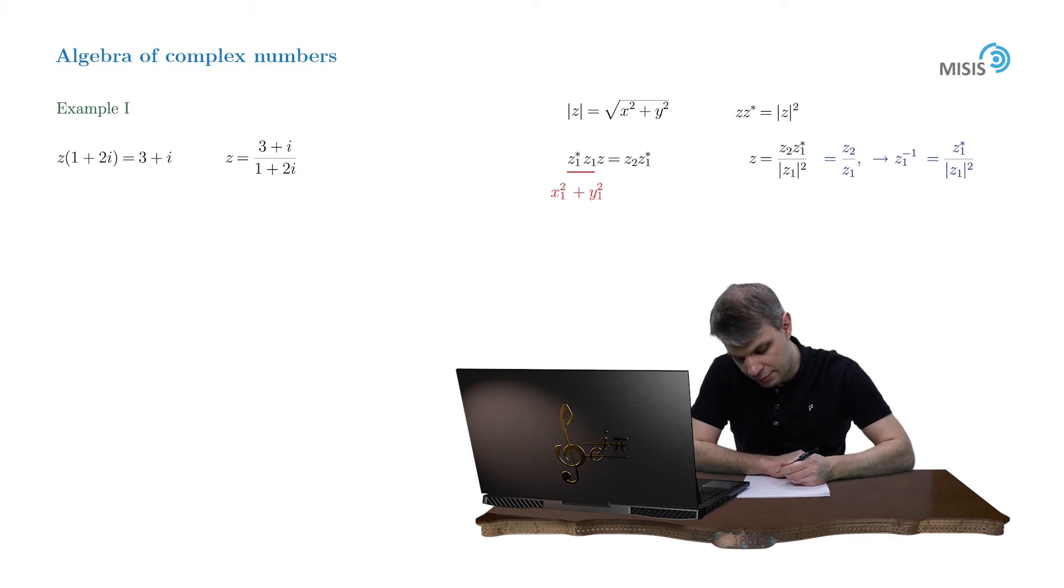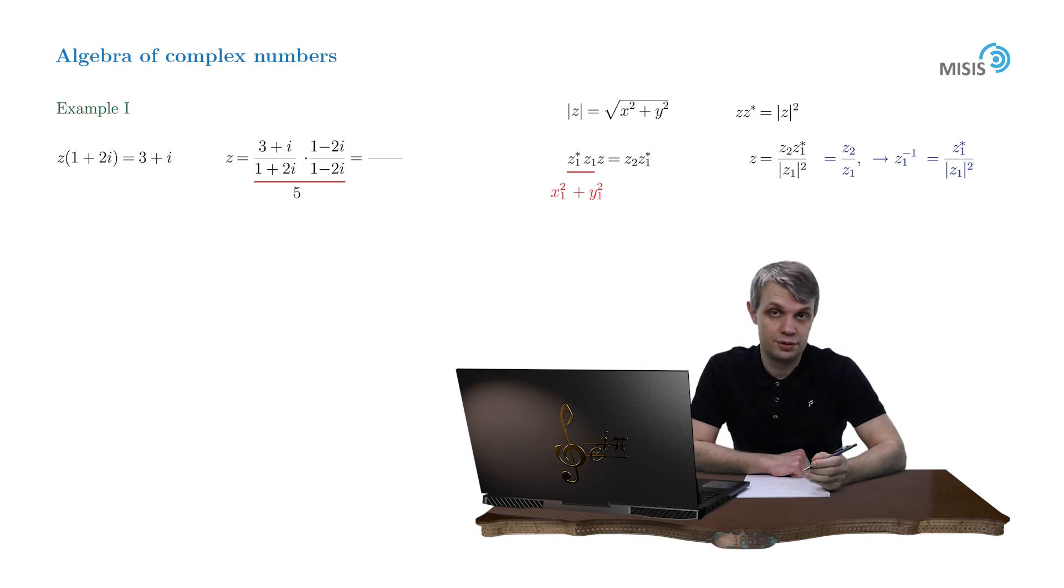So you have 3 plus i times 1 minus 2i divided by 1 plus 2i times 1 minus 2i. So now your denominator is a real number. It's 5, while your numerator is easily computed using the definition of the product of two complex numbers. So it's simply 5 minus 5i. And you obtain 1 minus i.